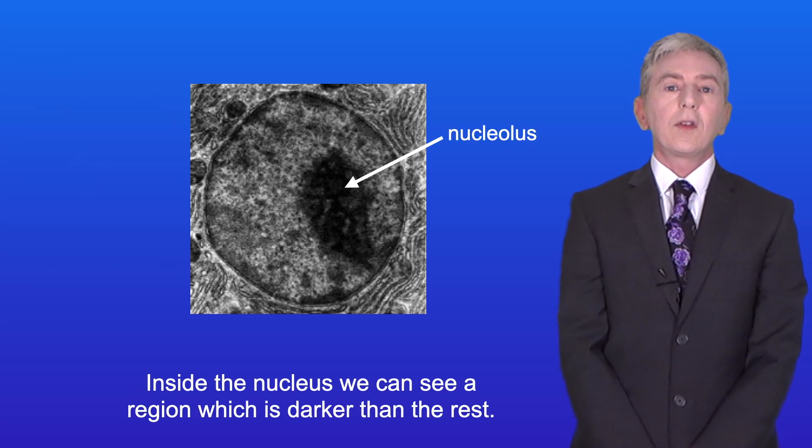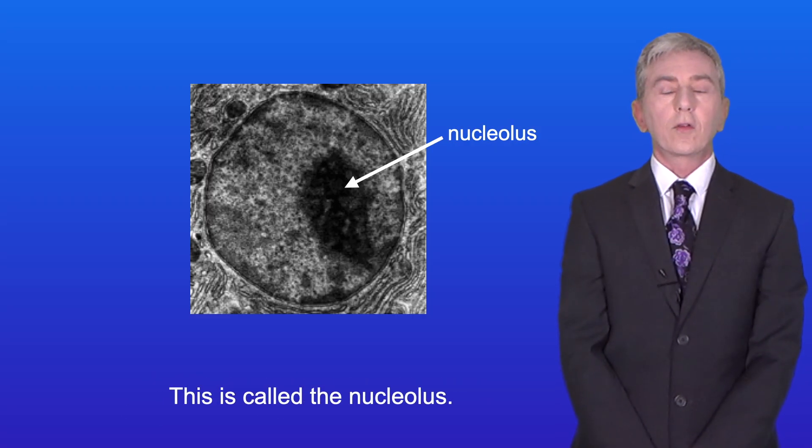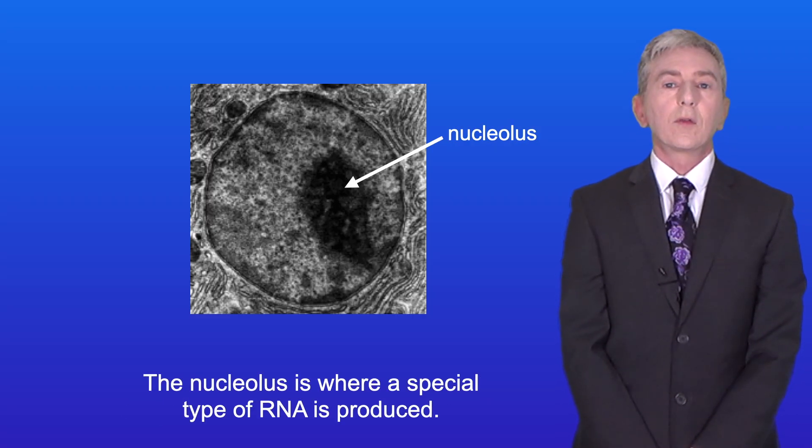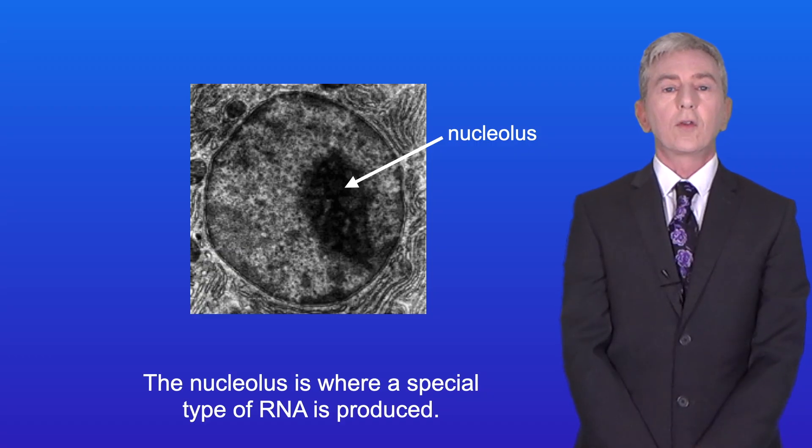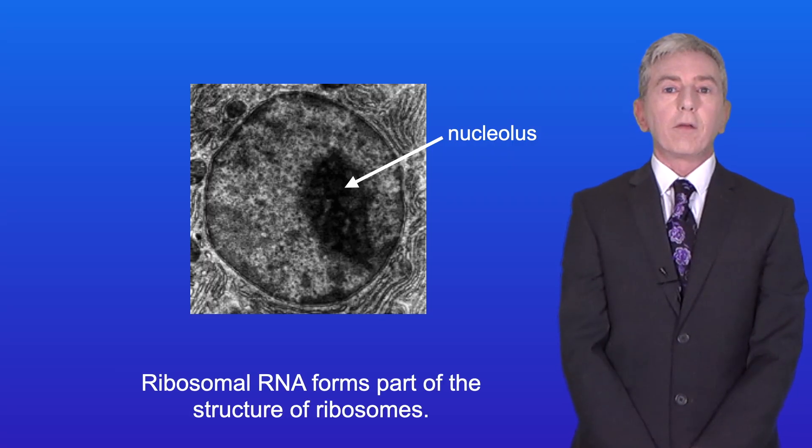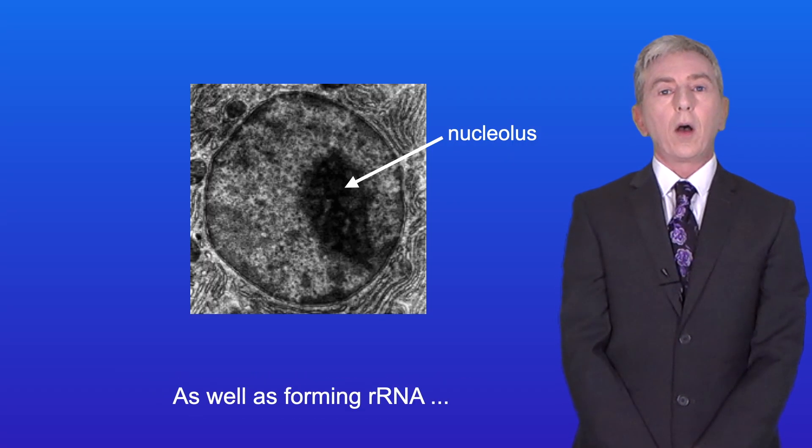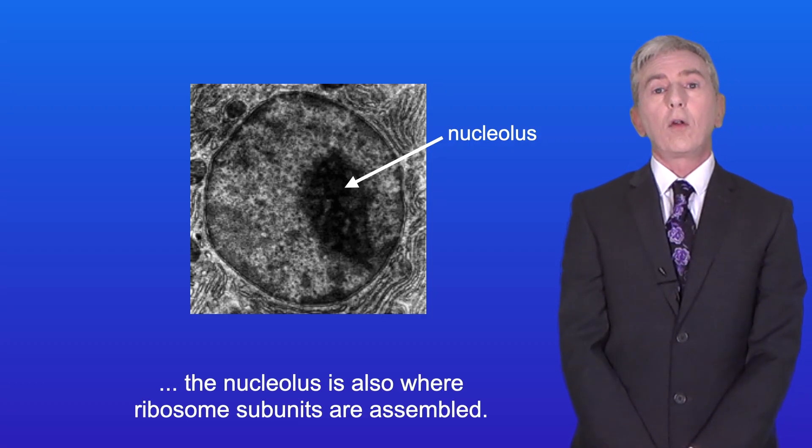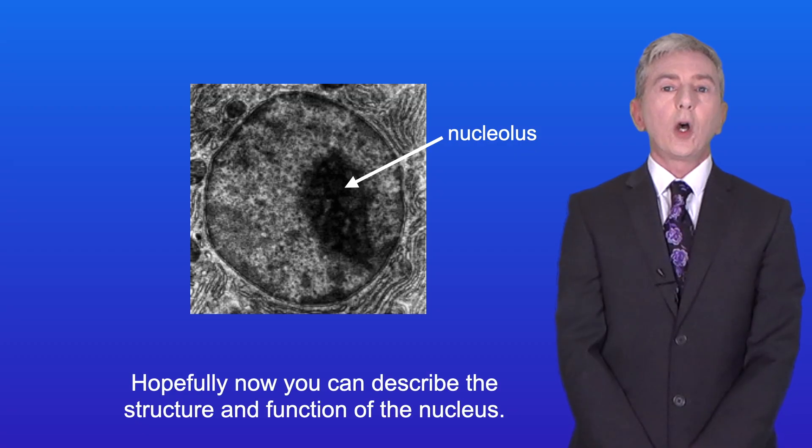Inside the nucleus we can see a region which is darker than the rest. This is called the nucleolus. The nucleolus is where a special type of RNA is produced. This is called ribosomal RNA or rRNA. Ribosomal RNA forms part of the structure of ribosomes. As well as forming rRNA, the nucleolus is also where ribosome subunits are assembled. Hopefully now you can describe the structure and function of the nucleus.